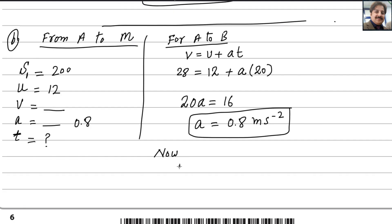Now s equals ut plus half at squared. Plug in the values. S is 200, u is 12, and t we need to find. Plus 1 over 2 into 0.8 t squared.